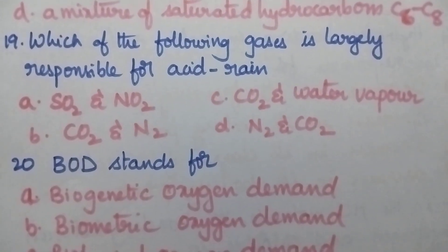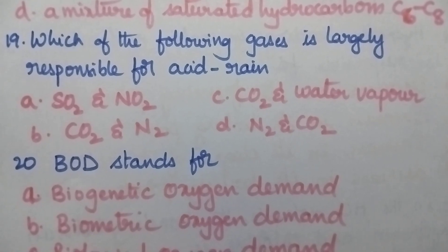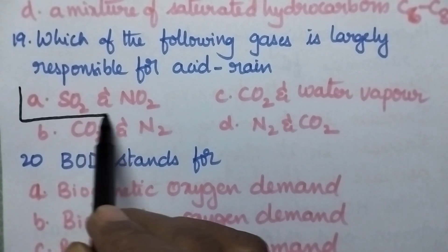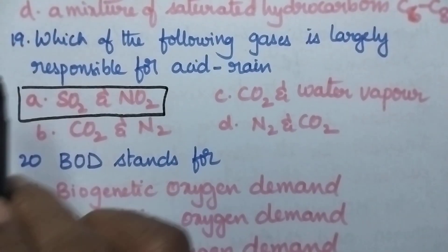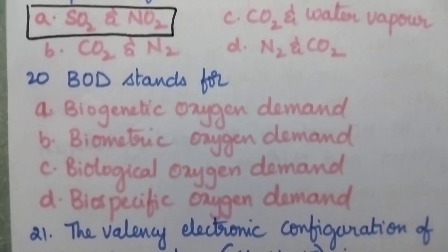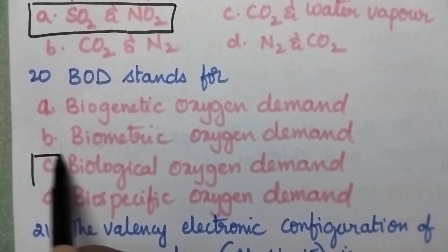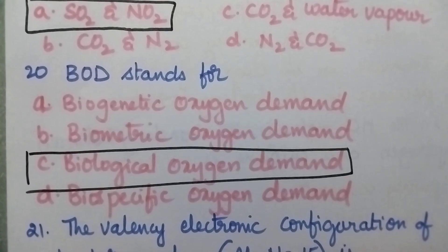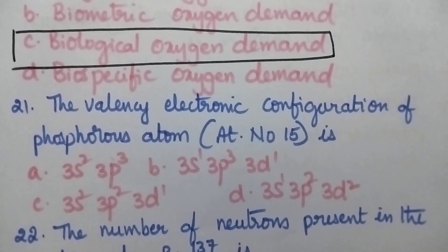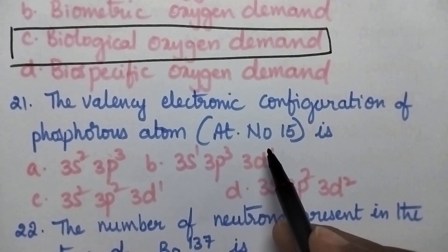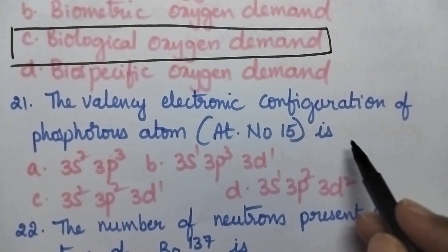Which of the following gases is largely responsible for acid rain? Acid rain is mainly caused by the oxides of sulfur and nitrogen, so option A is the right answer. BOD stands for Biological Oxygen Demand, so option C is the right answer.